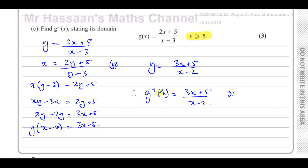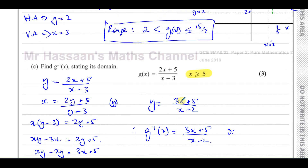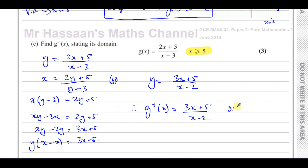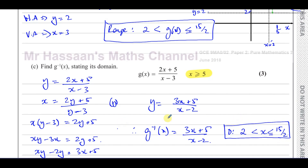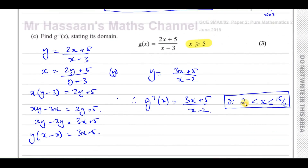The domain of the inverse function is the same as the range of the original function, because finding the inverse swaps the x and y — and thus swaps domain and range. So the domain of g⁻¹ is 2 < x ≤ 15/2. Note: you must write x here, not g(x) or y, since domain refers to the x-axis. Writing the wrong variable would lose marks. That's the answer to part C.